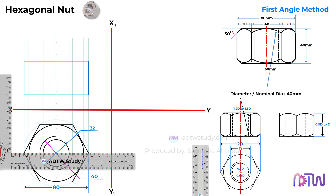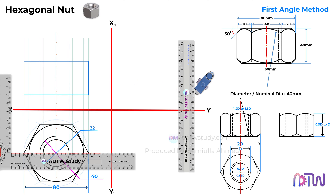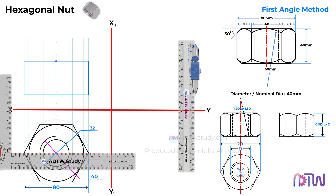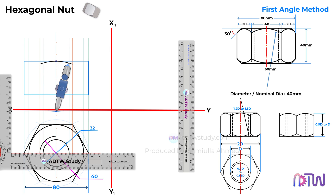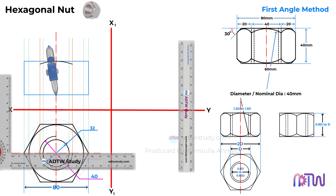The radius of the arc, that is the chamfer, is 1.5 times the diameter. To draw this, adjust the compass to 60mm in length and by placing it at this point, cut the arc. This point will act as a center for the chamfer. Place the compass at this point and cut the arc. Similarly, for the opposite side chamfer of the nut, place the compass at this point and cut the arc. Now, placing it on this point, draw the chamfer as shown.